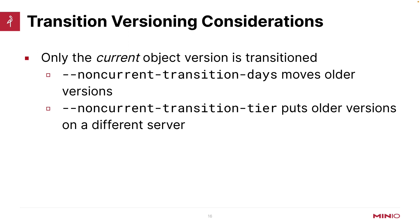If I'm doing transitioning and I have versioning turned on, only the current object version is transitioned. Non-current transition days will move older versions, and I can set a non-current transition tier as well — I don't have to use the same tier for older versions. Commonly you're going to use the same tier because it makes things easier, but I can put older versions on a different tier if I want to.